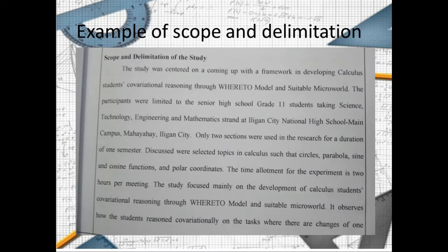Here we have an example of the scope and delimitation. In this example, the researcher used delimitation because he or she set boundaries to which a study can be done. The researcher mentioned the focus of the study, which is developing co-operational reasoning of calculus students, the focus participants which are real-world STEM students, and also mentioned some topics in calculus that are included in the study.